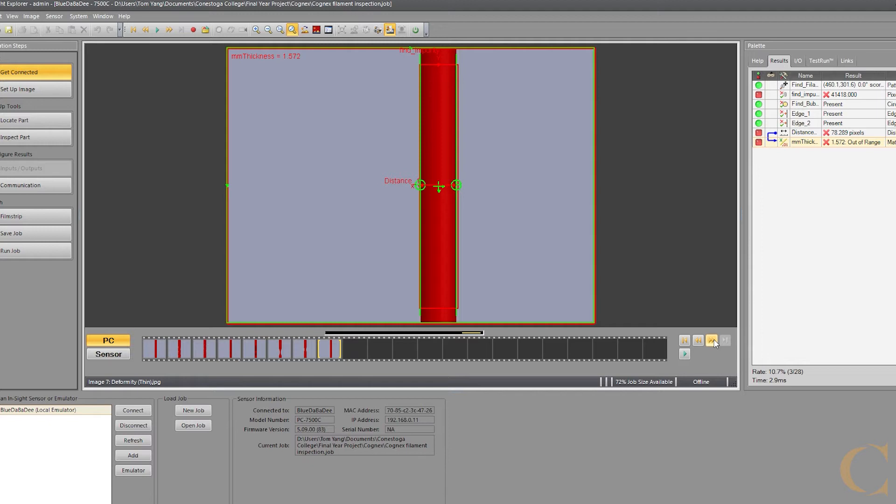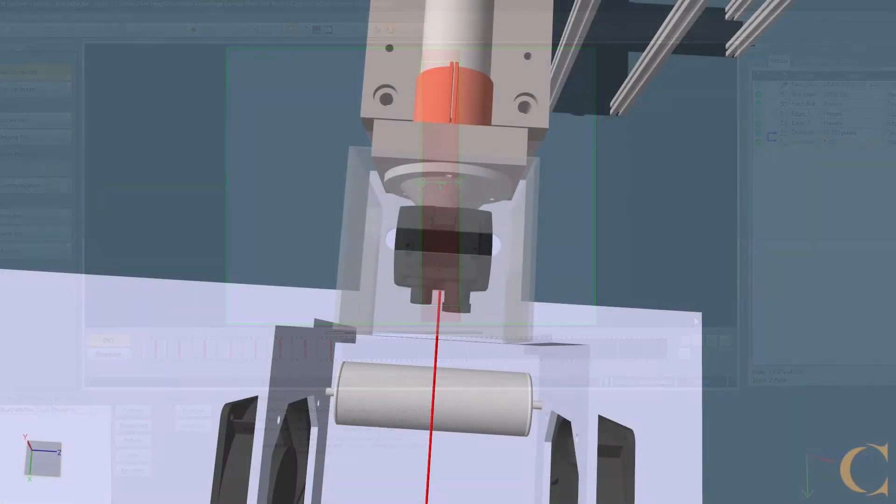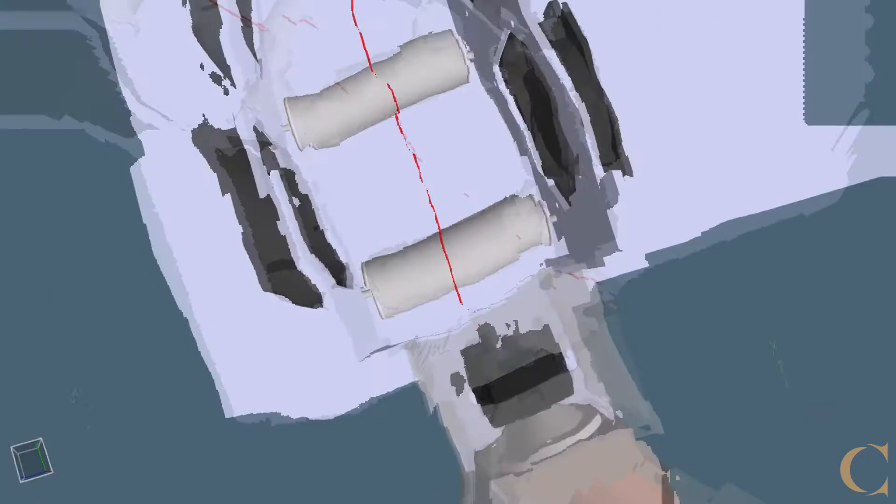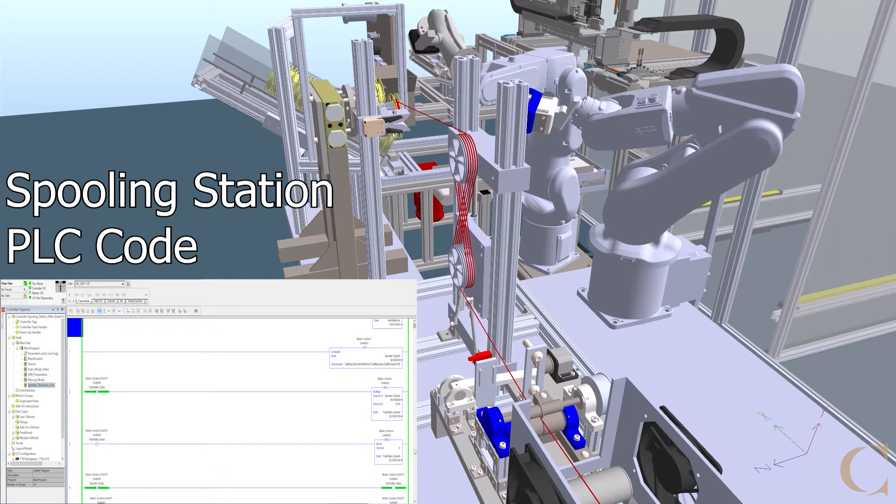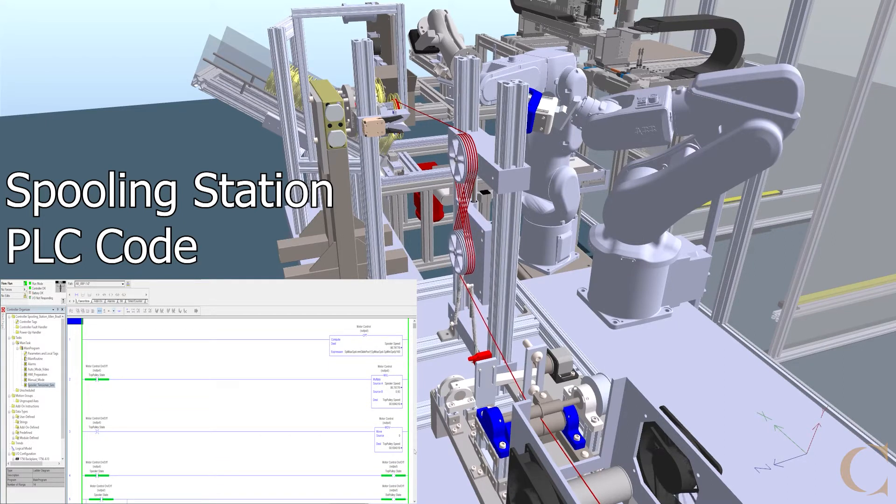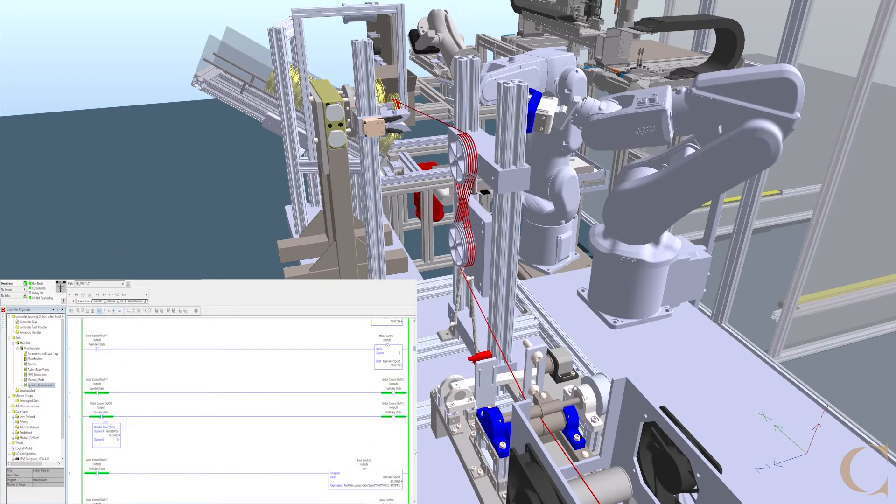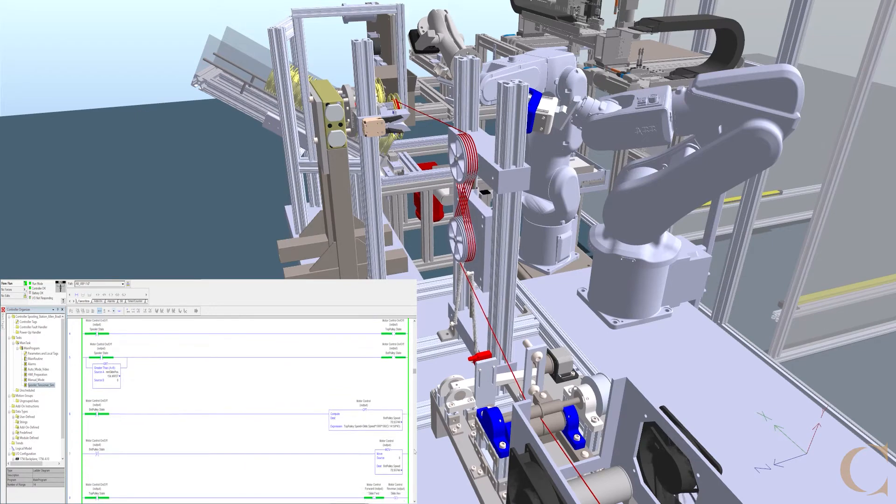Filament exiting the cooling chamber is solid enough for the feeding wheels to pull filament through. The rate of the feeding wheels must match the rate of extrusion so that the filament forms a straight, consistent strand in the cooling station. Filament is wound through the tensioner and spun onto the spool by the spooler.